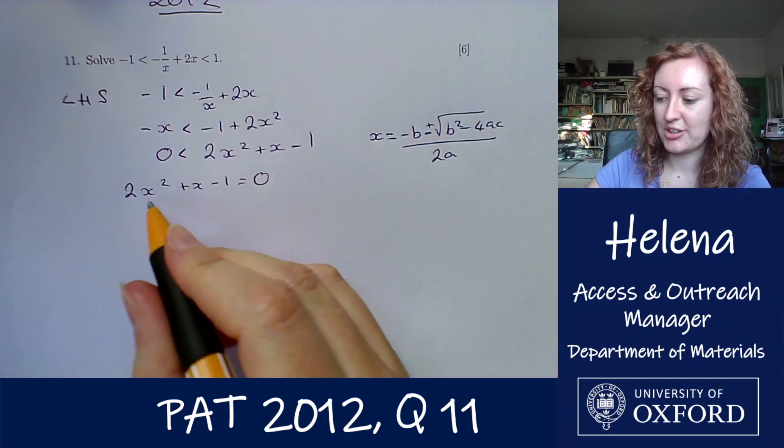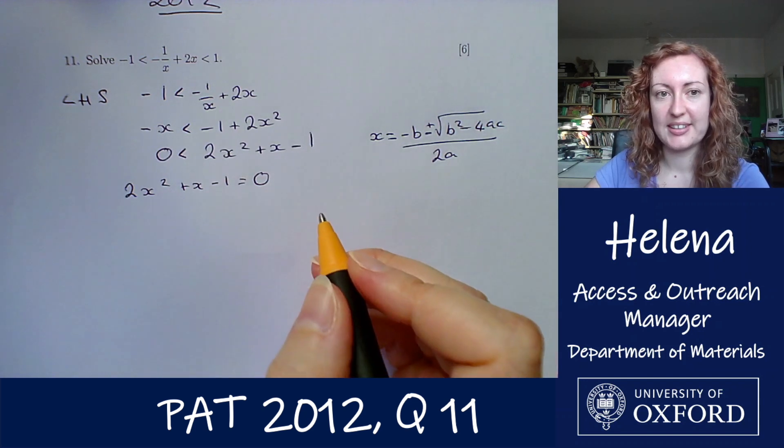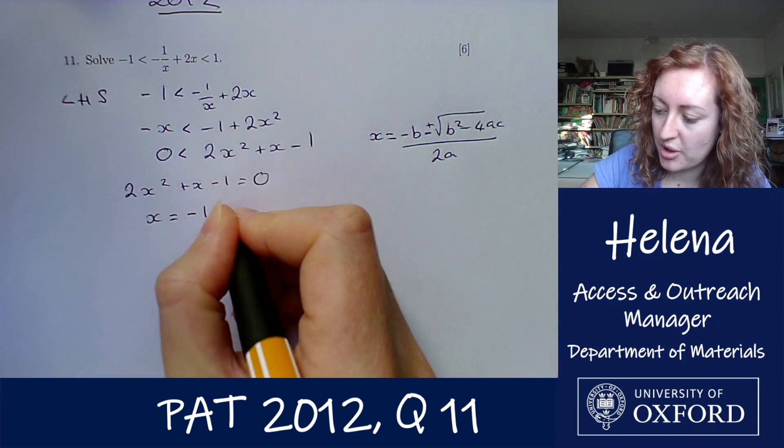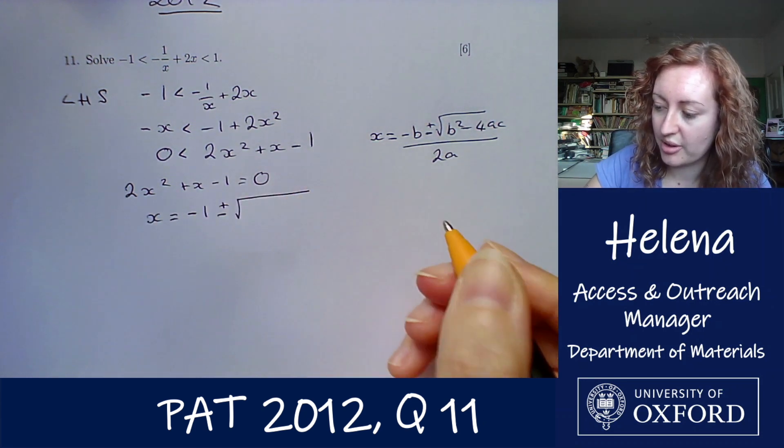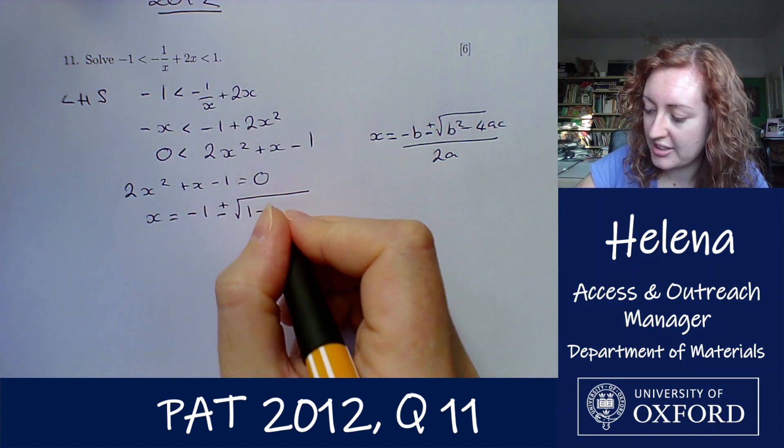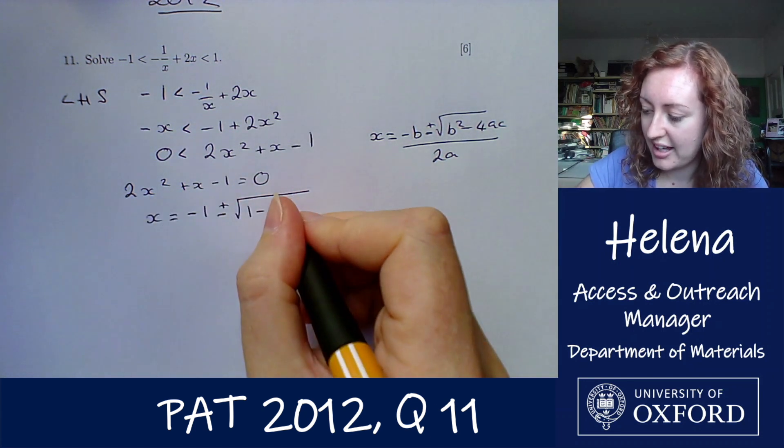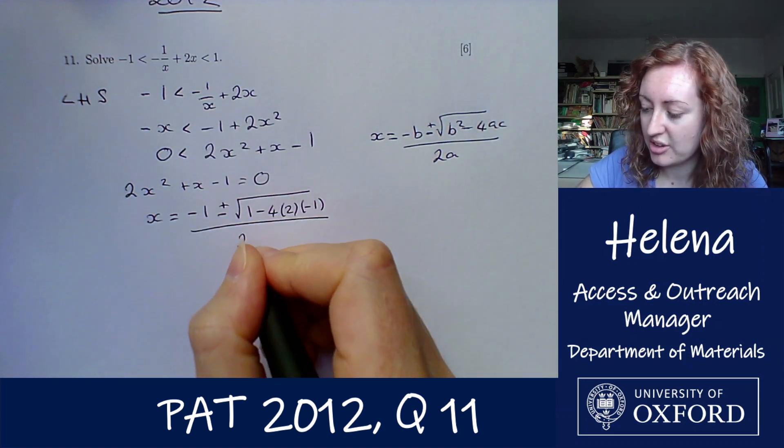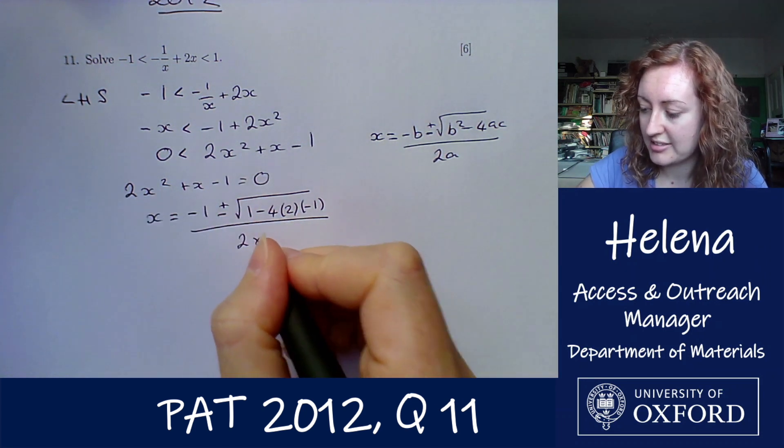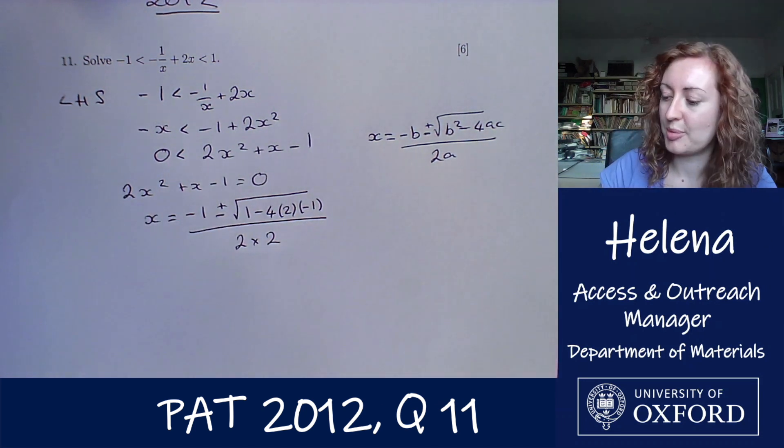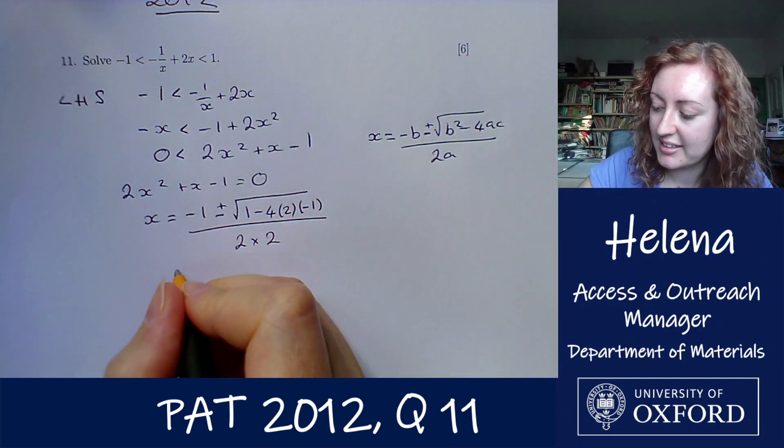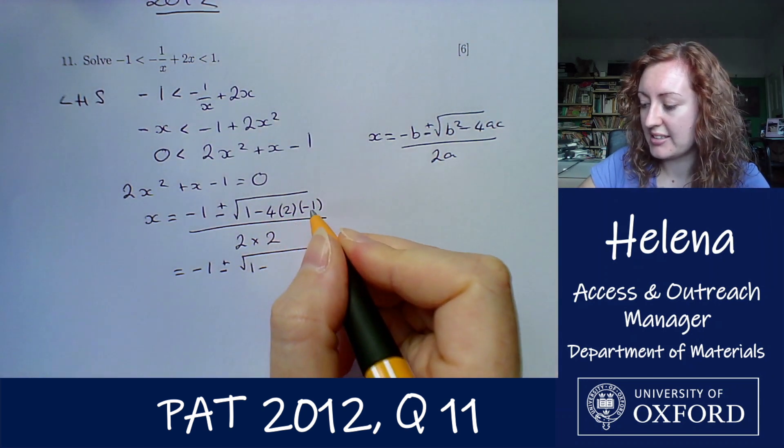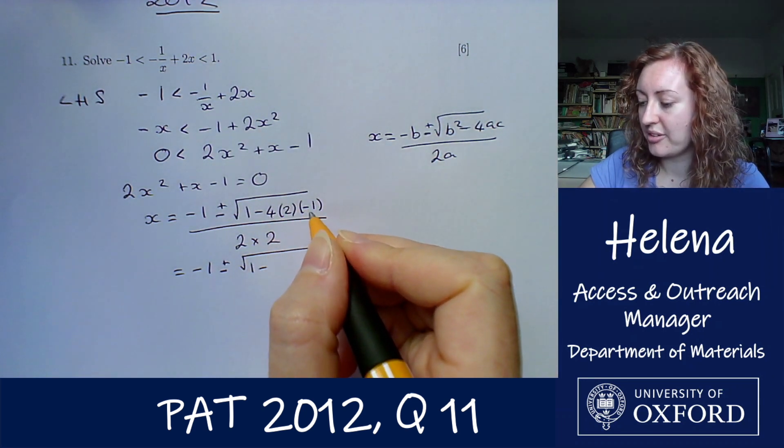So let's substitute the correct coefficients for this quadratic into the formula. We get x equals minus 1 plus or minus the square root of 1 squared minus 4 times a which is 2 times c which is minus 1, all divided by 2a which is 2 times 2. Let's multiply this out and simplify. So we have minus 1 plus or minus 1 minus 8 times minus 1 which gives us plus 8, all divided by 4.